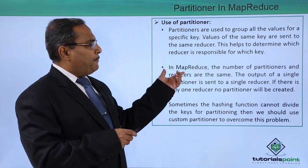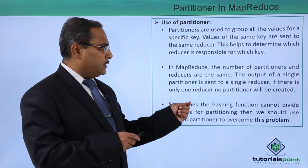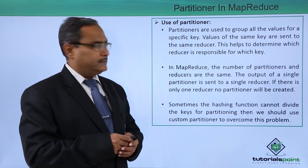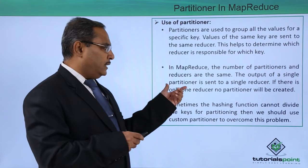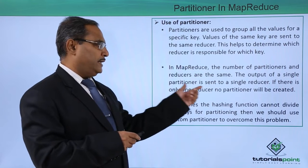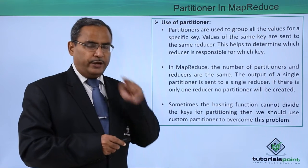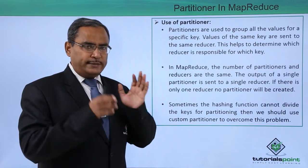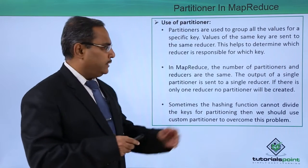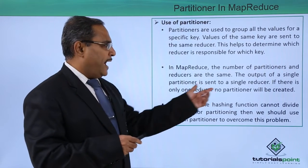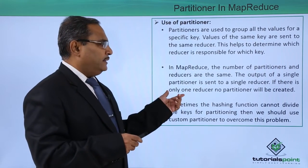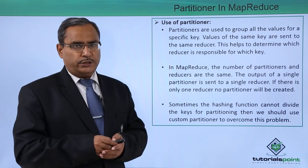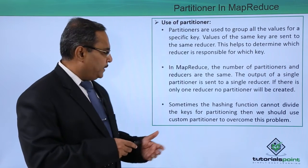This helps to determine which reducer is responsible for which key. In MapReduce, the number of partitioners and reducers will be the same. The output of a single partitioner is sent to a single reducer. And if there is only one reducer, then no partitioner will be required.